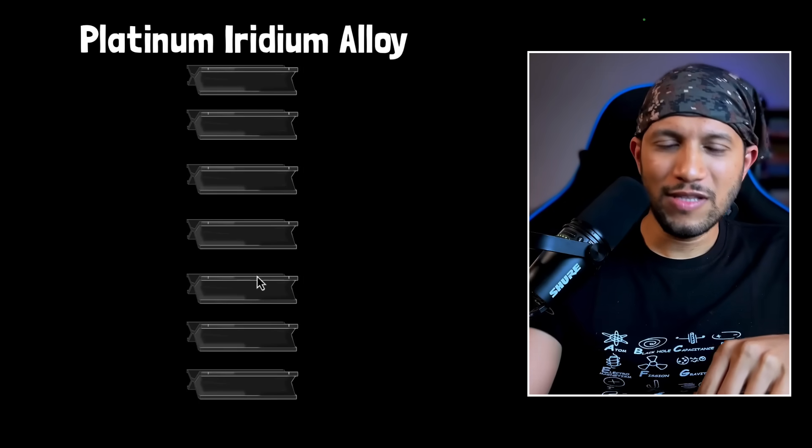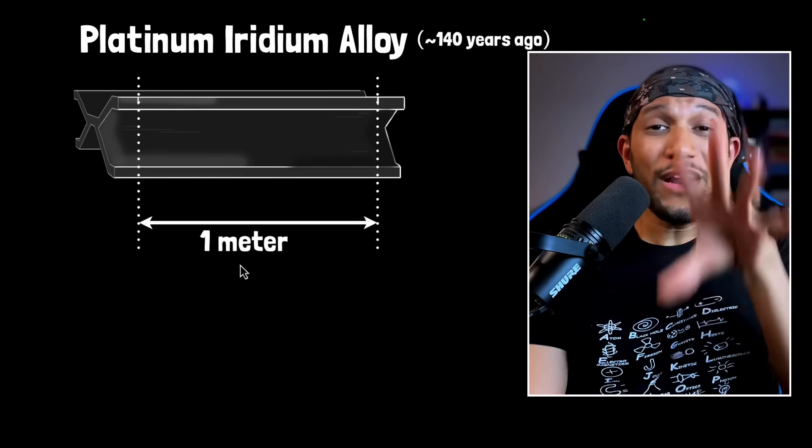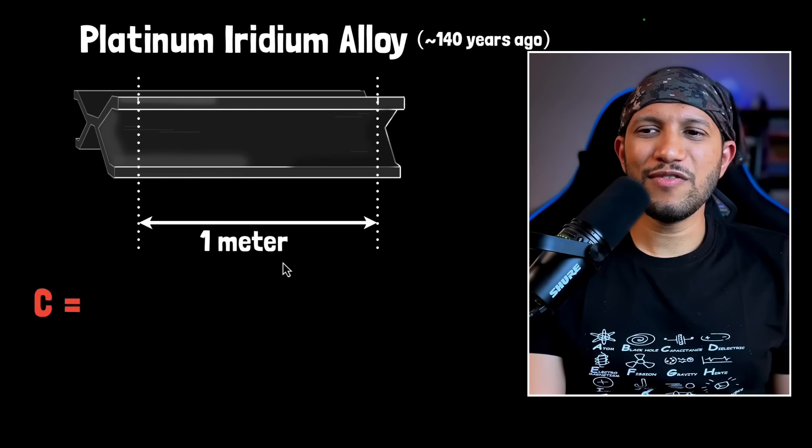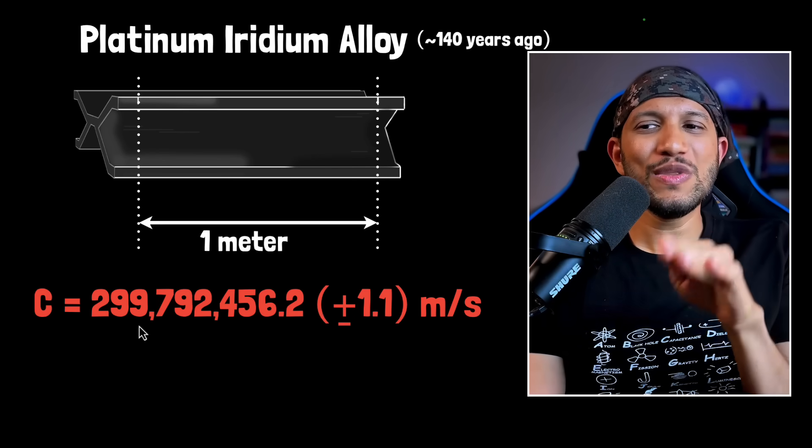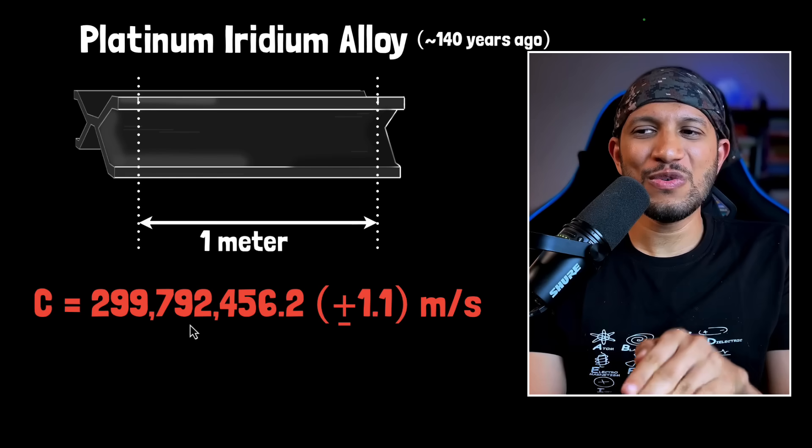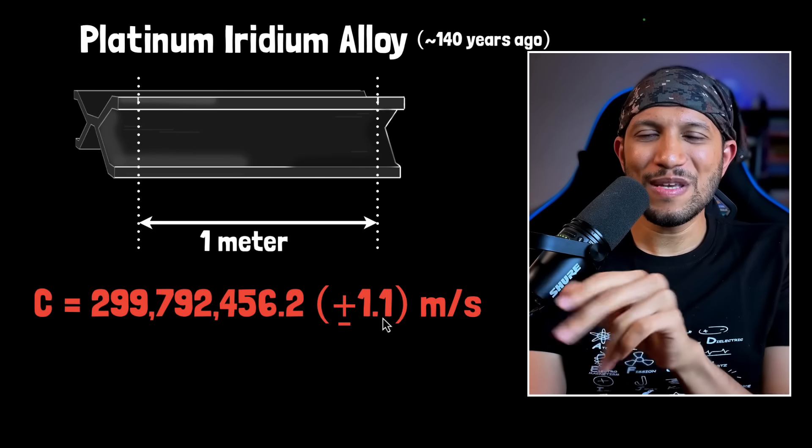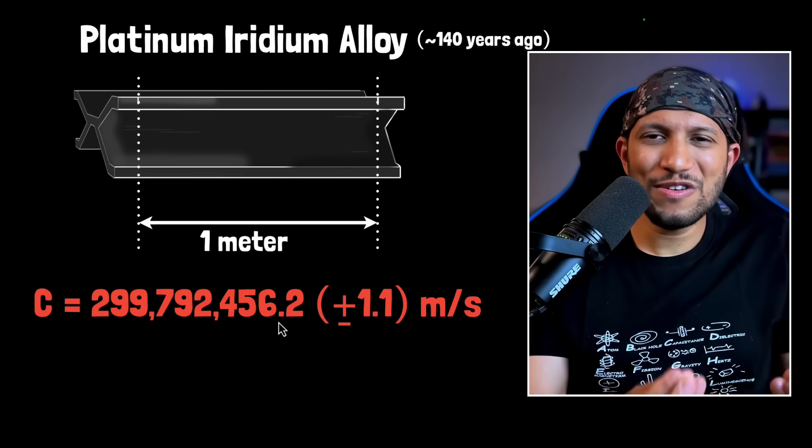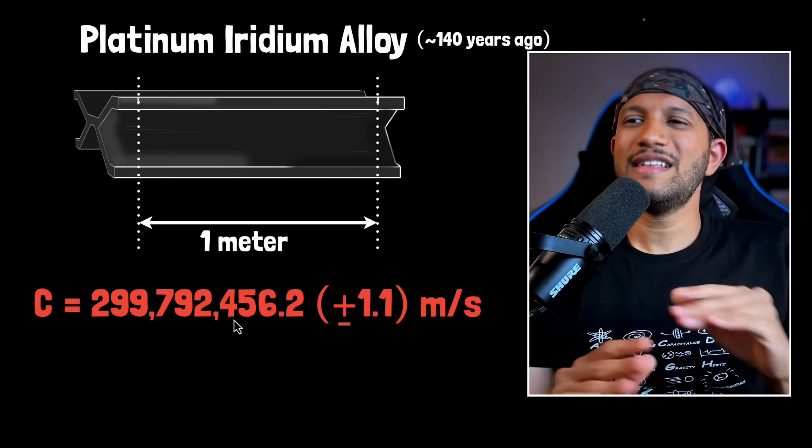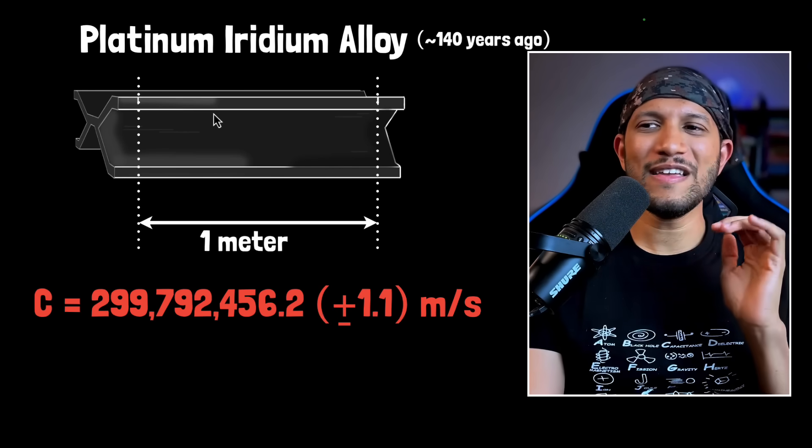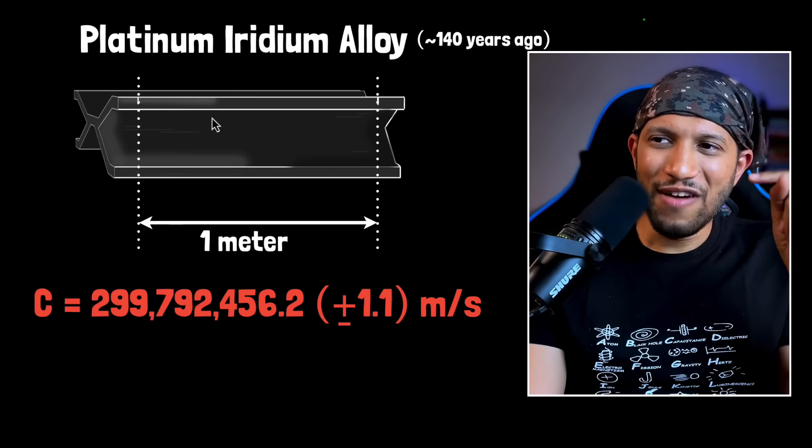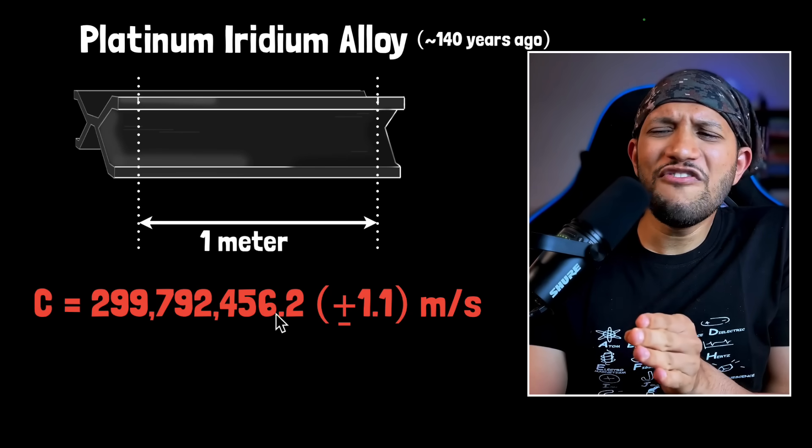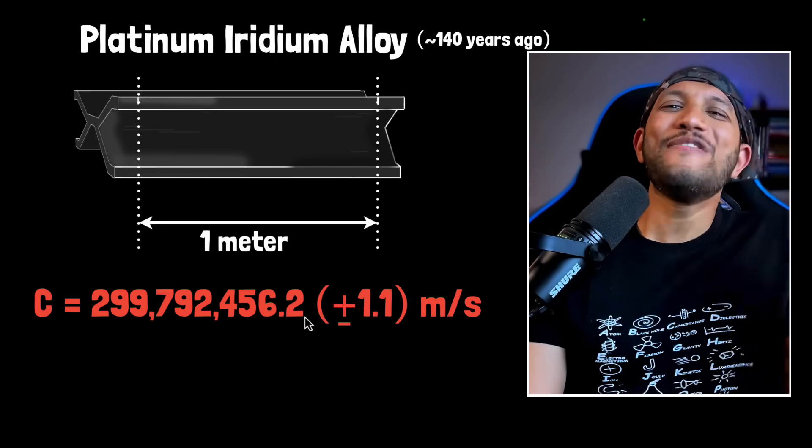But at the end of the day, it is still a physical object. So if it gets destroyed, it can get destroyed, then we would have, we will no longer have a meter. And that's the reason why we had to change it. But anyways, when we had used this as a definition of the meter, according to this definition of the meter, the speed of light, the most precise measurement of the speed of light happened to be 299,792,456.2 with some uncertainty meters per second.